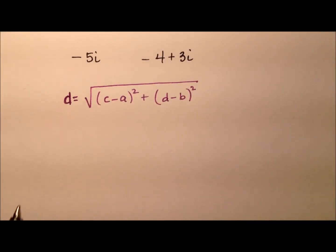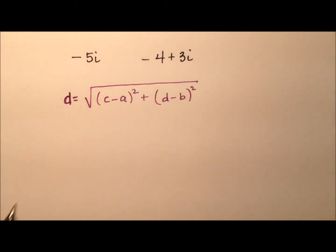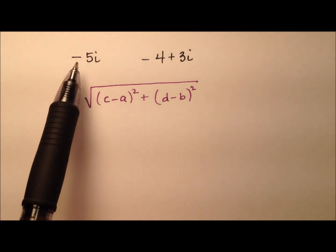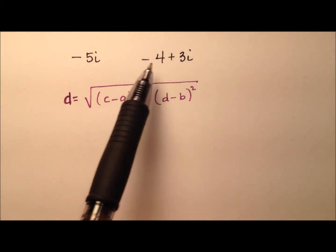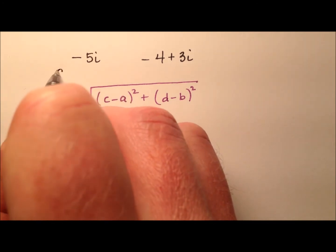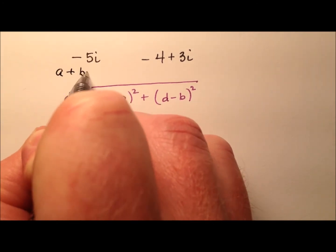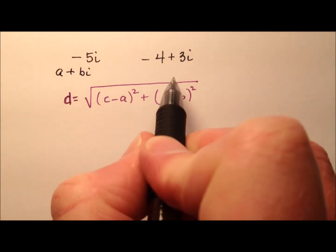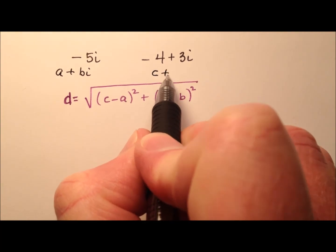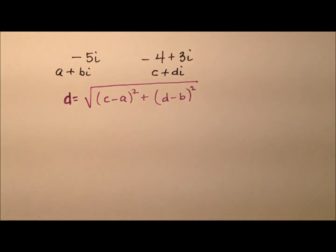In this example, we're going to calculate the distance between these two complex numbers. Complex numbers are going to be written in A plus Bi form. So I'll say A plus Bi, and then the second one I'll call C plus Di, because it's two separate numbers.